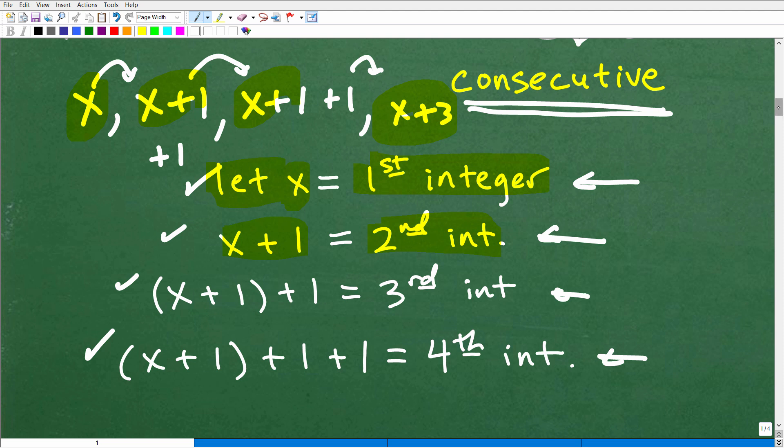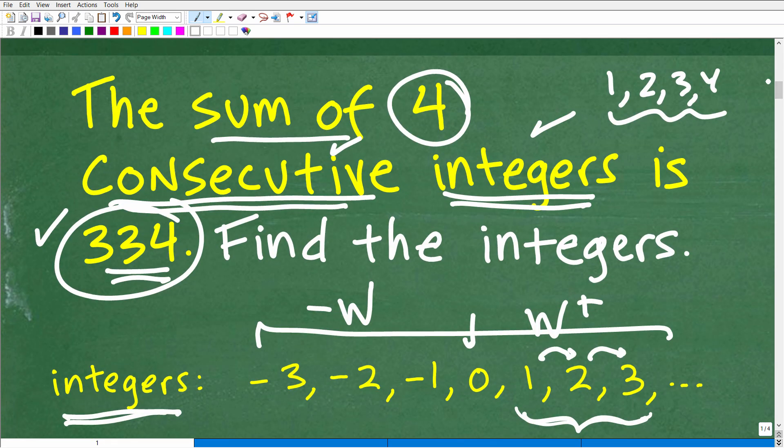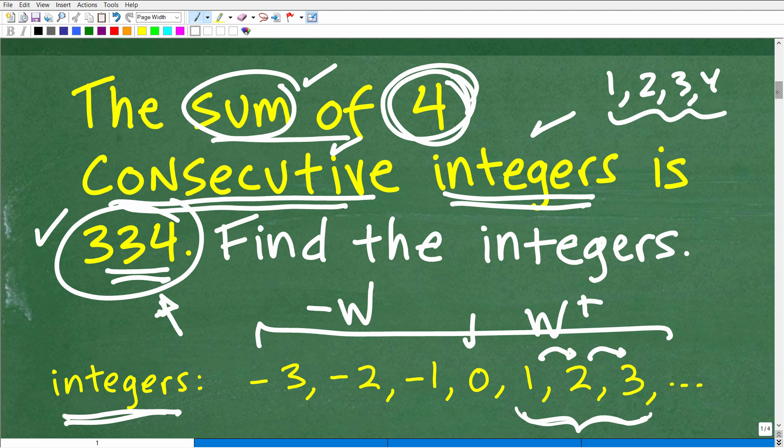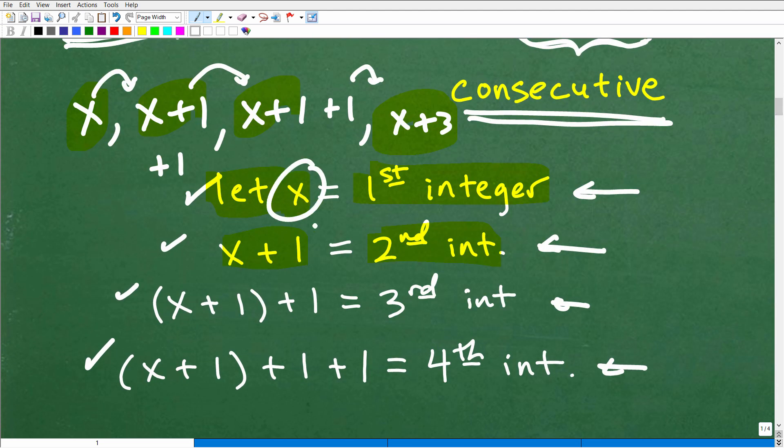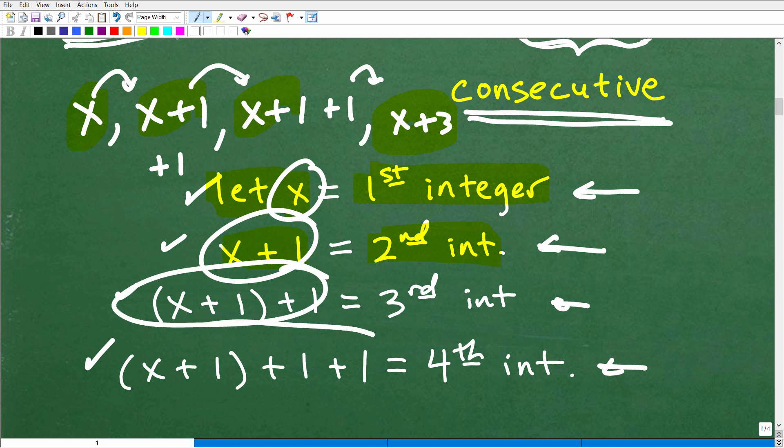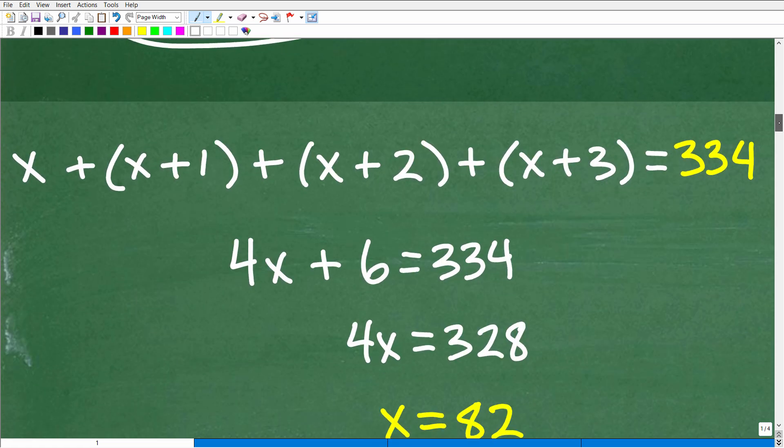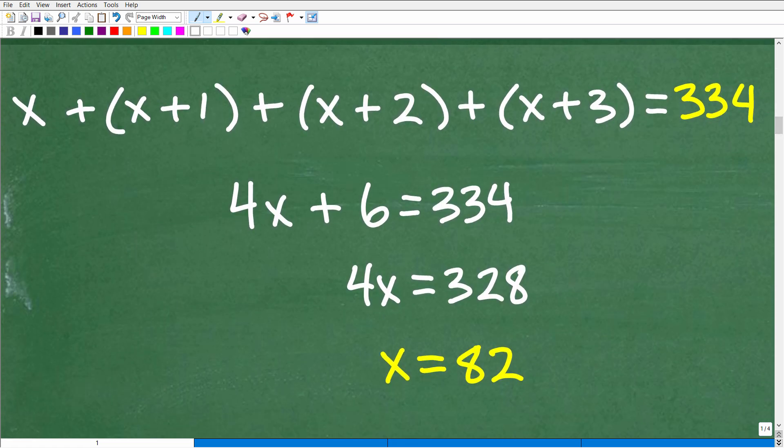But now what we need to do is go back to the problem. We're like all right, what does the problem say? The problem says what? The sum, the sum. In other words, if we add up these four consecutive integers, you're going to get 334. So that's what we're going to do. We're going to take these four integers here, 1, 2, 3, 4, four consecutive integers, and we're going to create an equation.